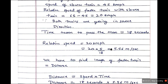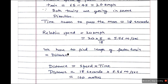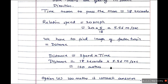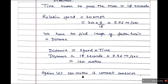The length of the faster train equals the distance traveled, using the formula: distance = speed × time. Speed is 5.56 meters per second and time is 18 seconds. When we multiply, we get 100 meters. Option C is the correct answer: 100 meters.